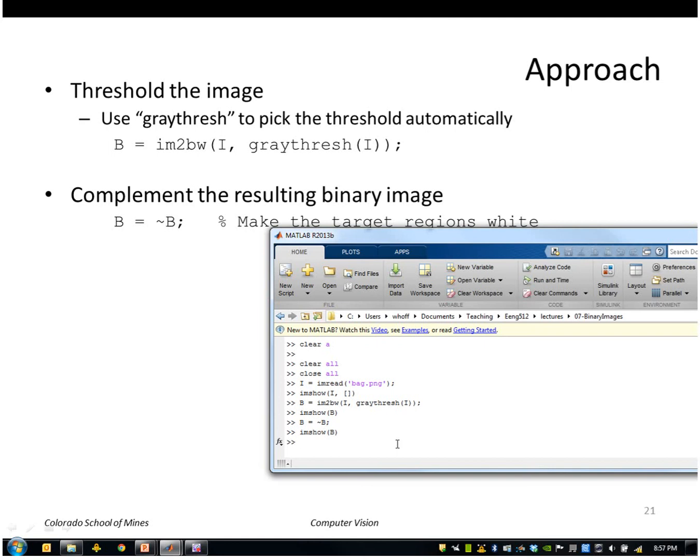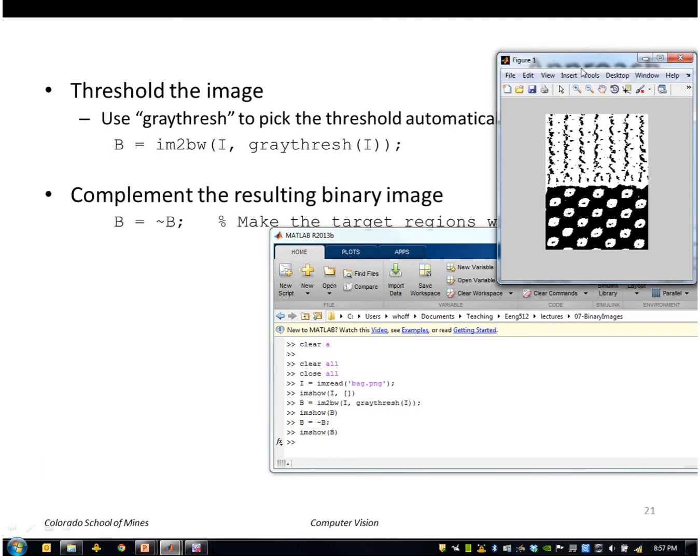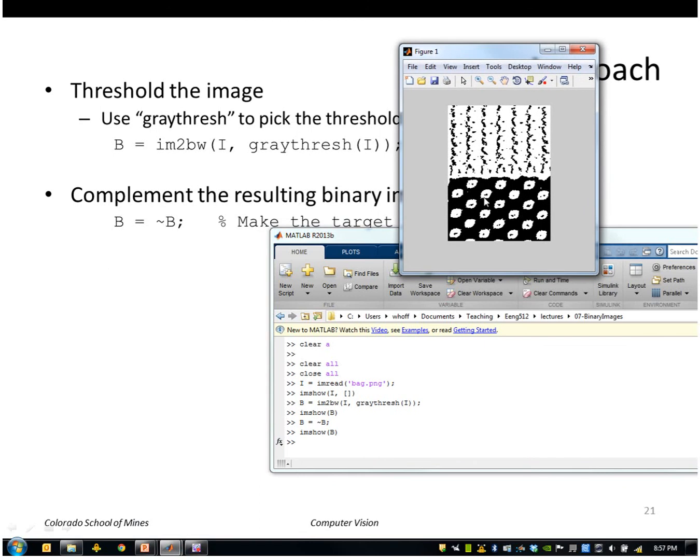So that gives me this now where the target regions are white. But I have gaps here so I have these little holes that I want to get rid of and a few noise white regions over here.